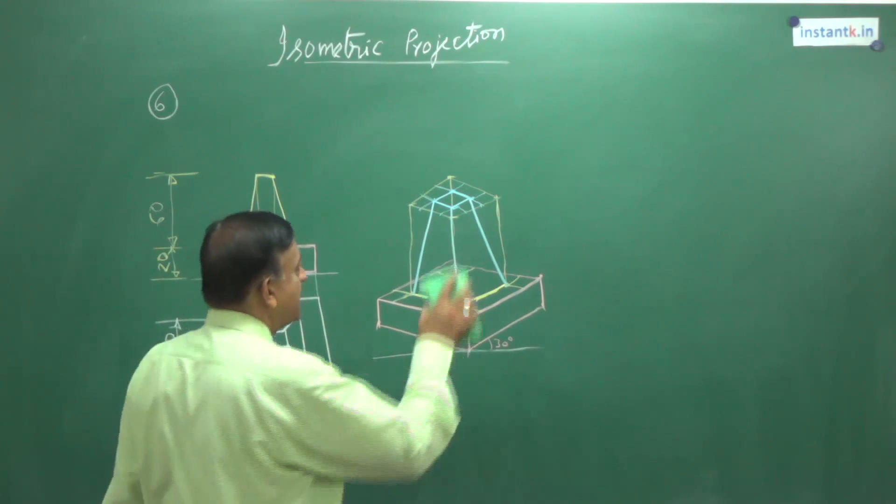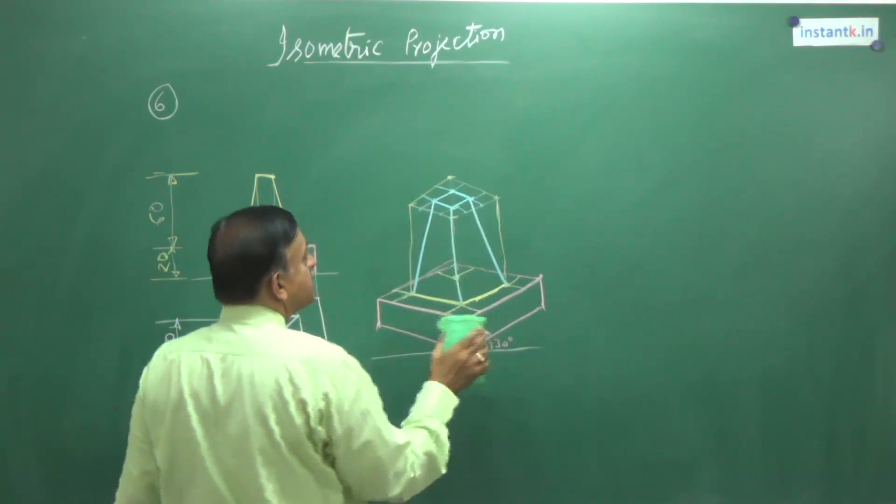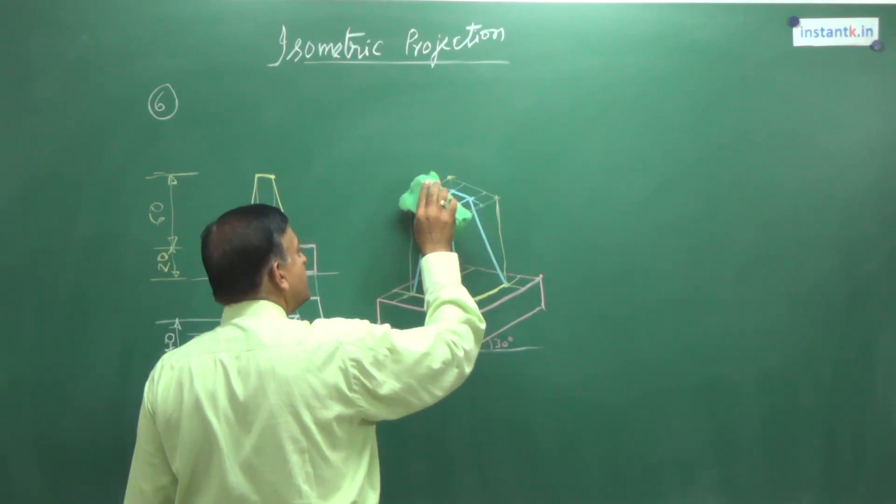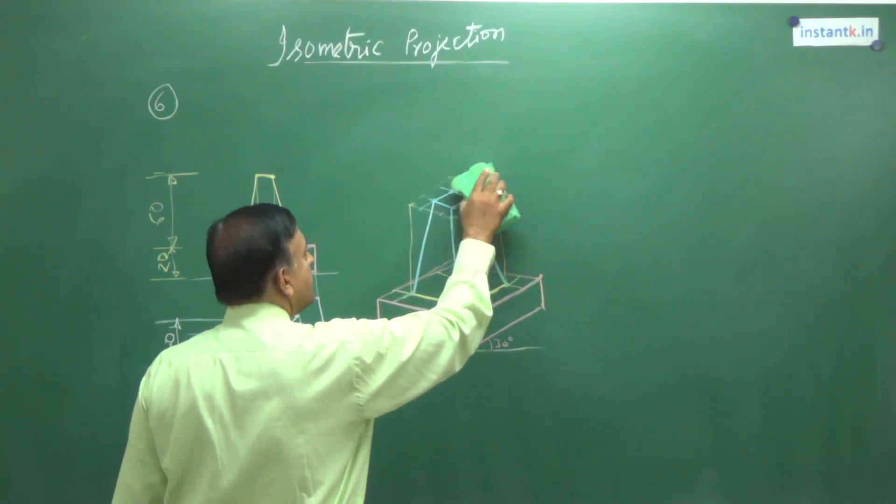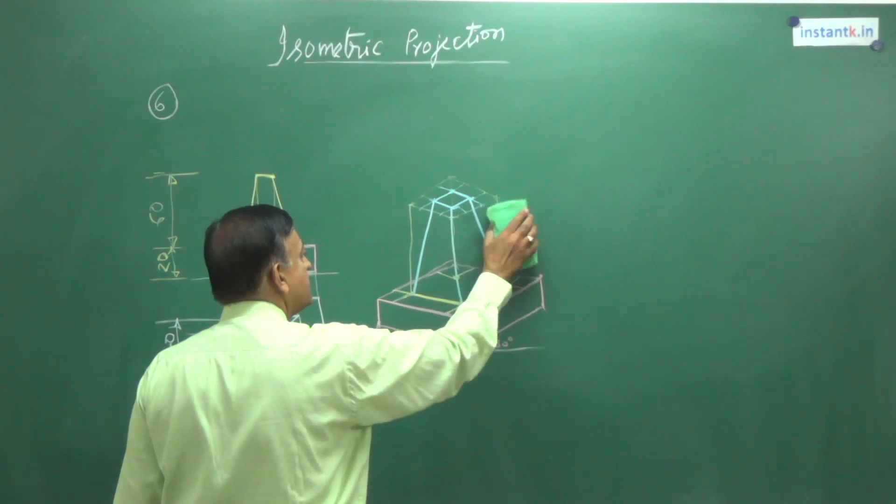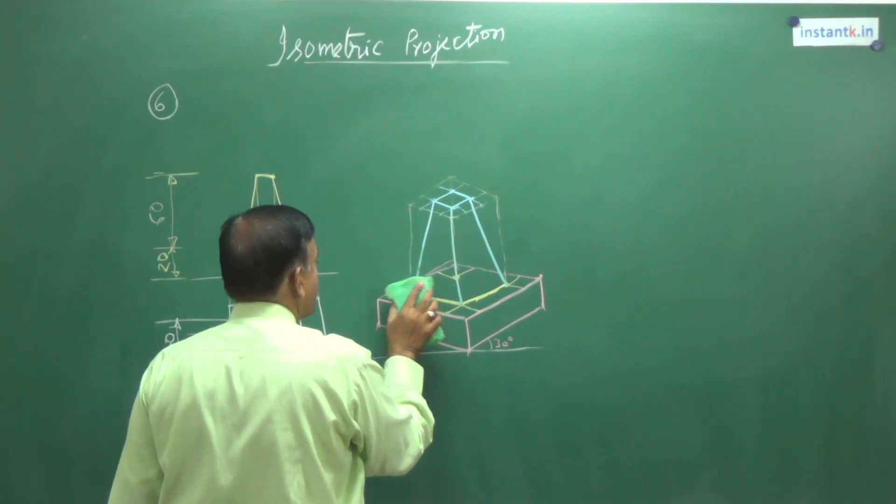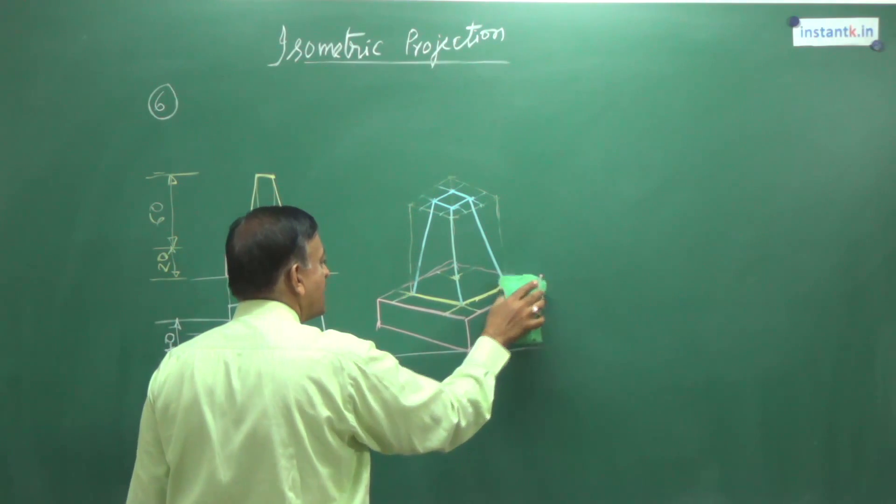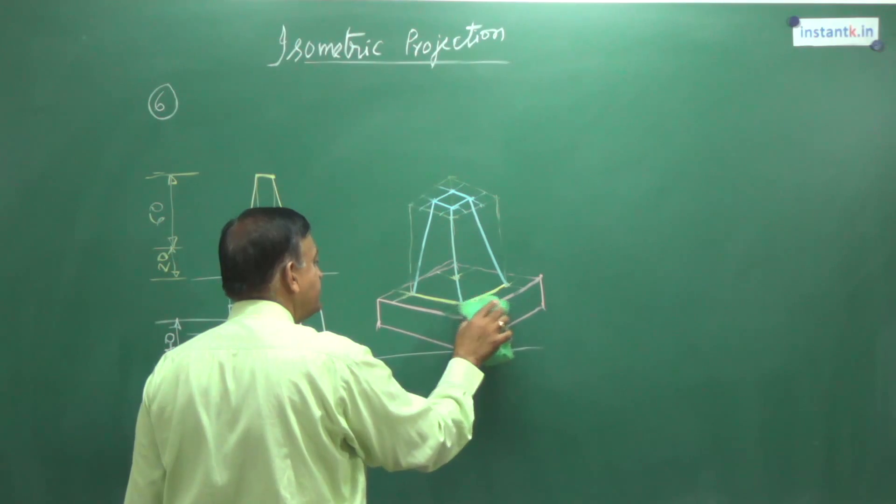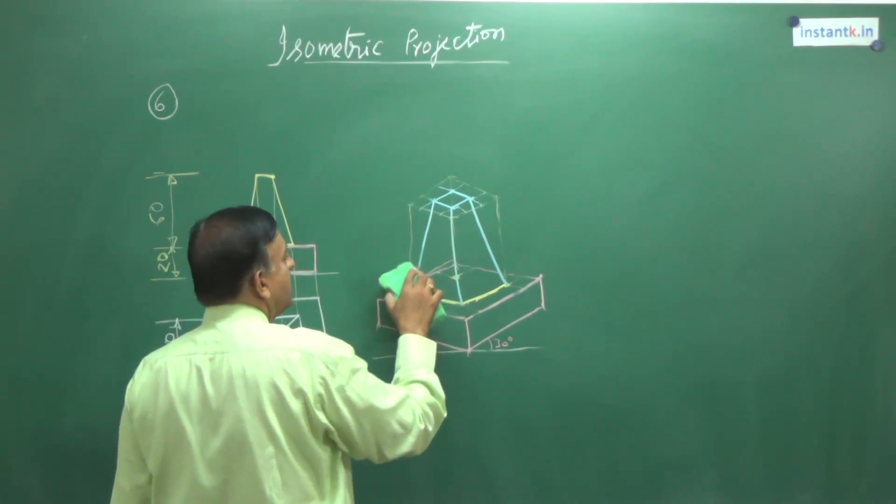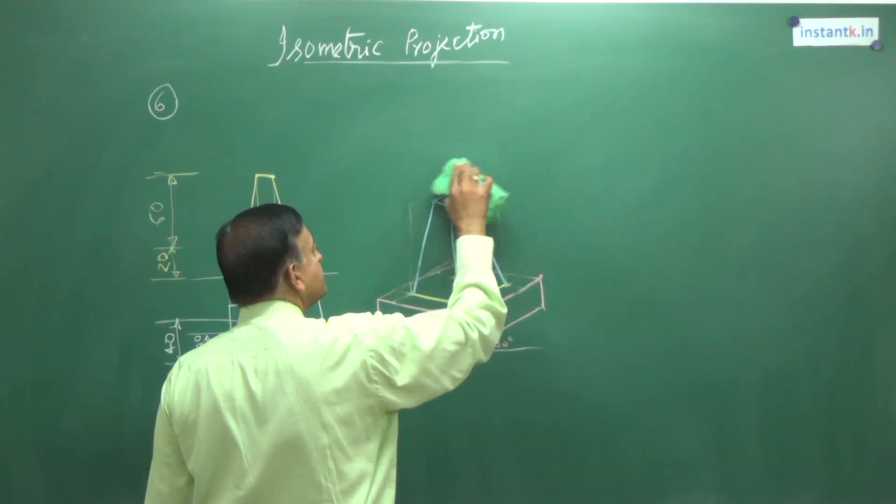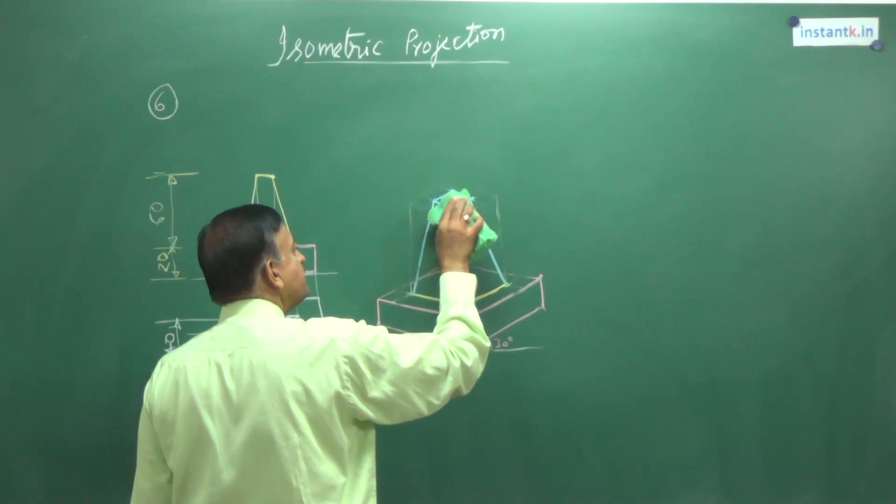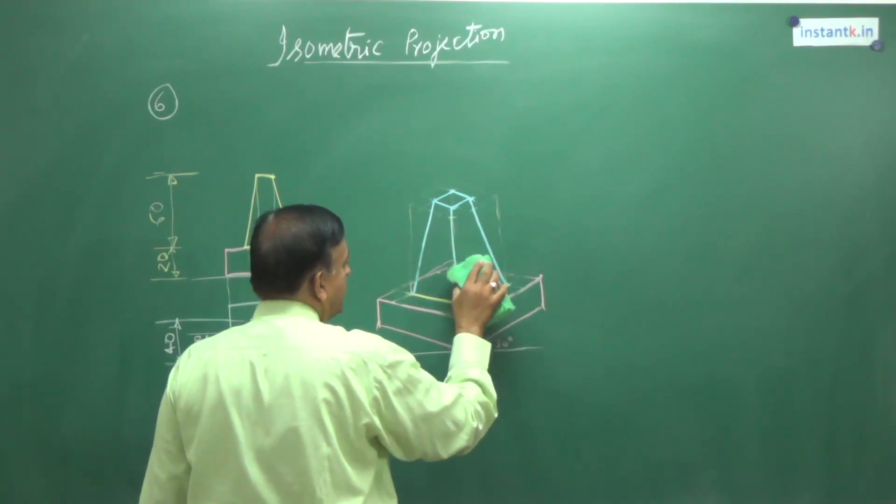So now only beautification has to be done. What beautification means? It means the remaining ones only we darken so that you get what is required from it in the end. And after doing all these construction, we remove these things as beautification.